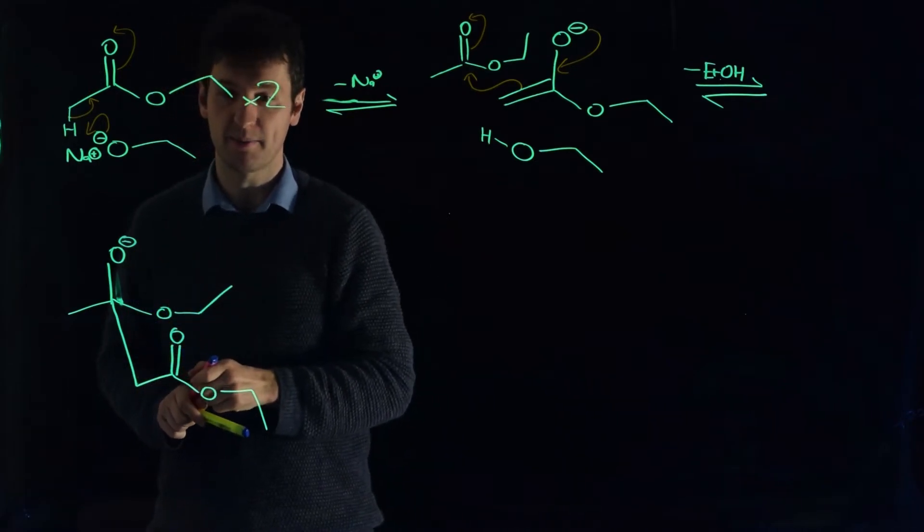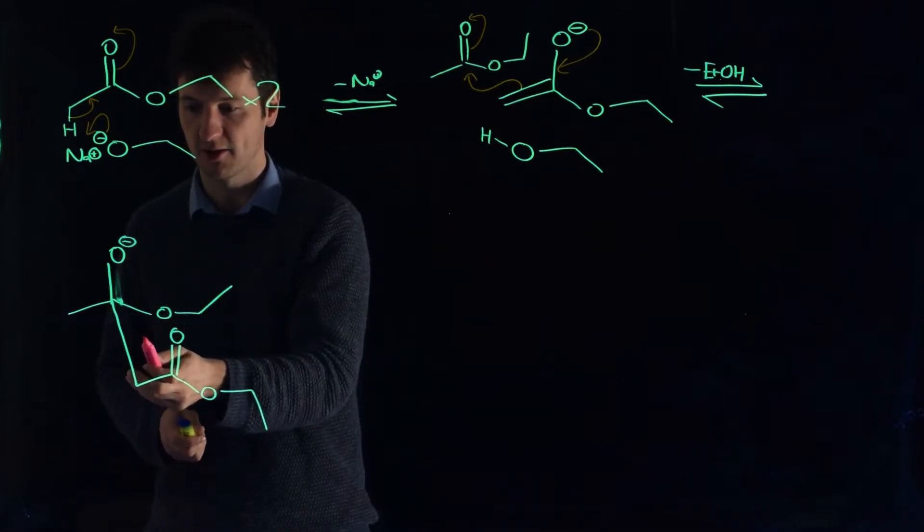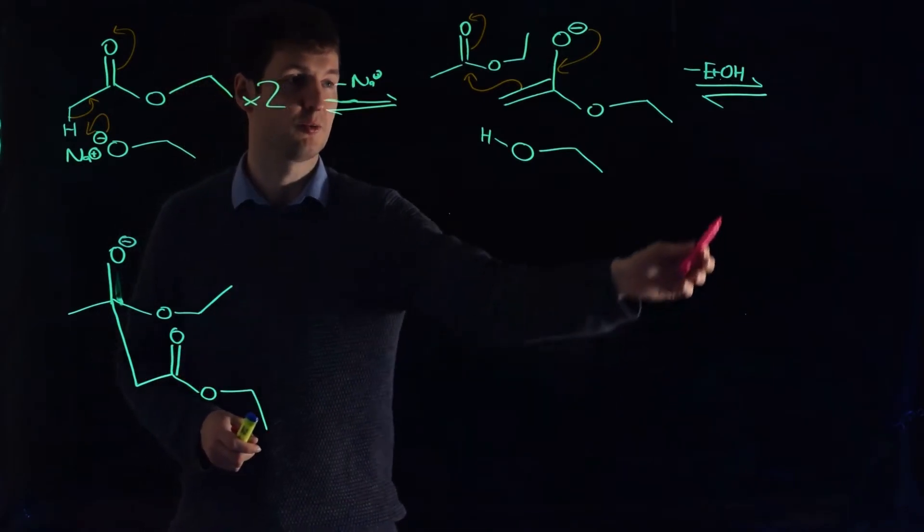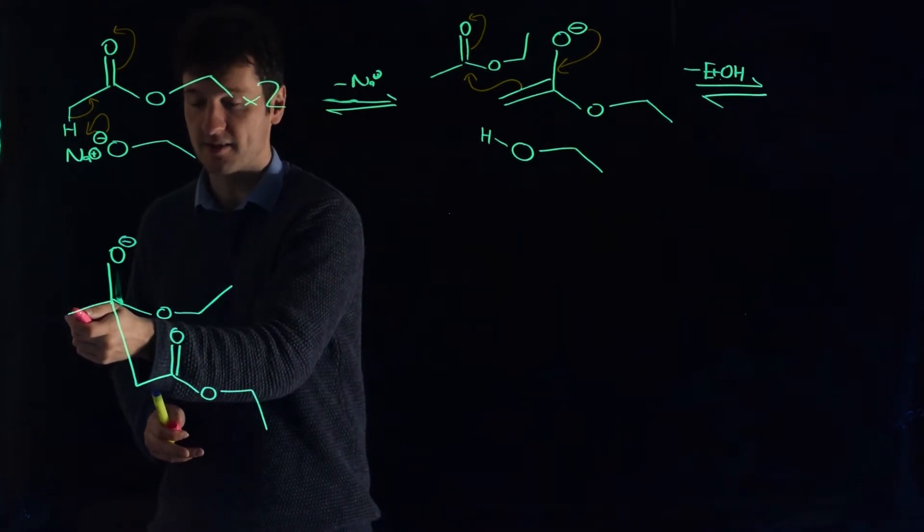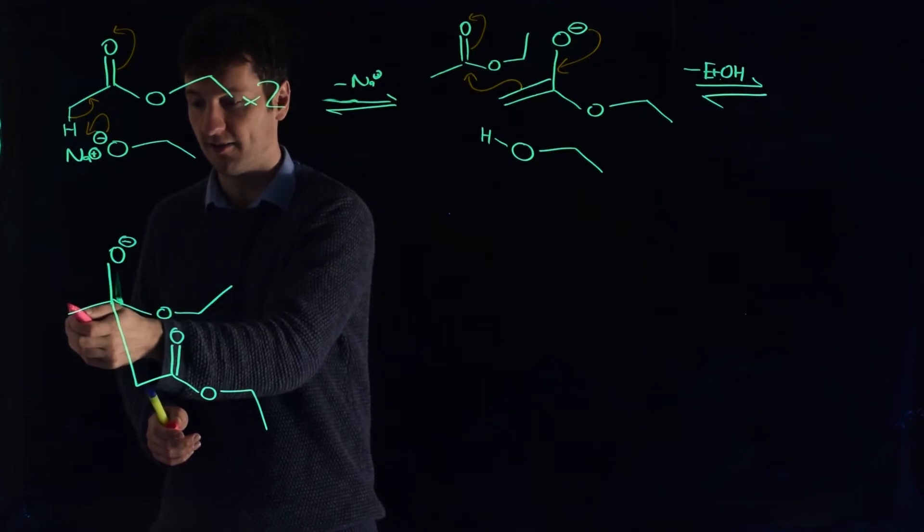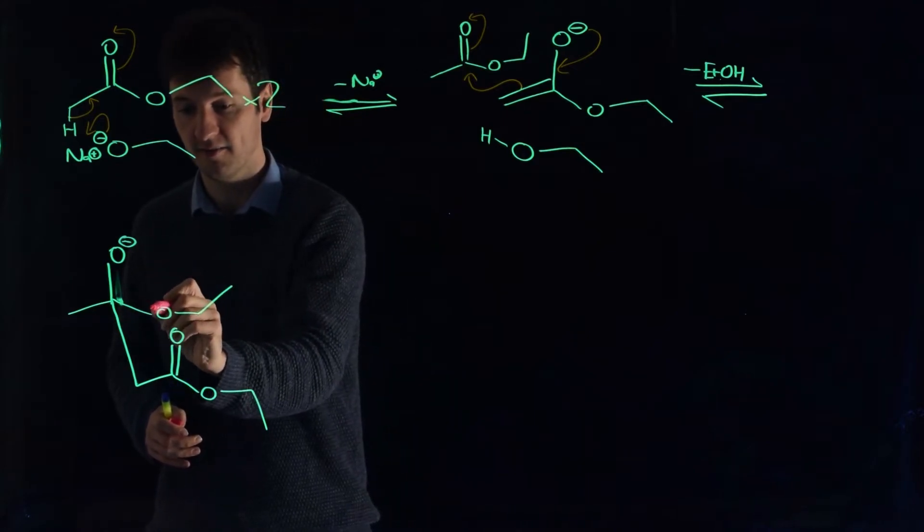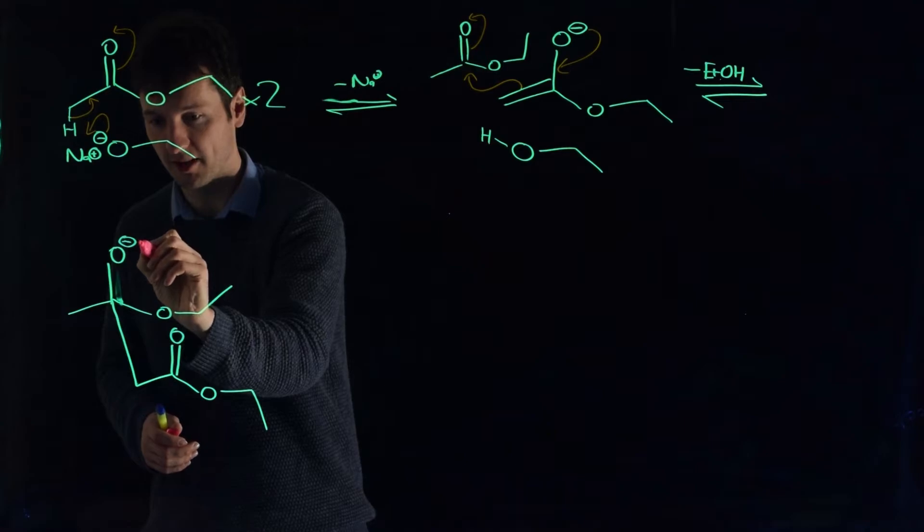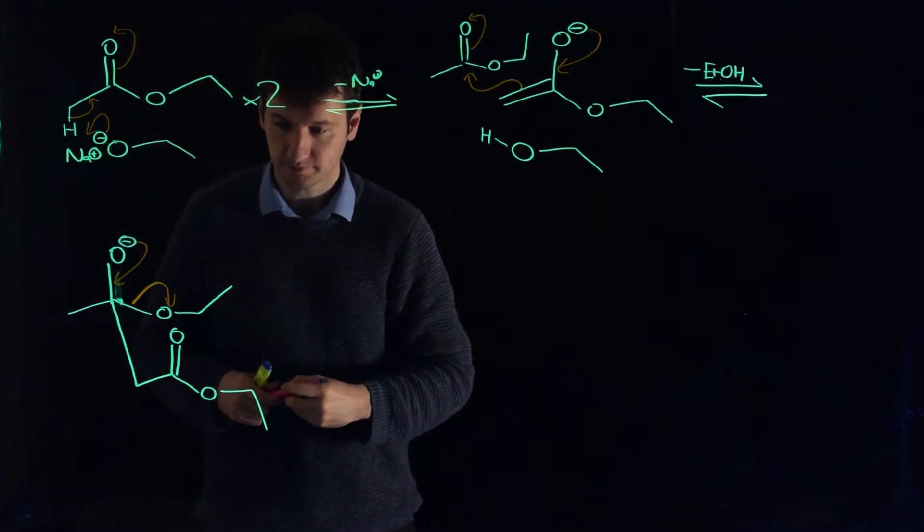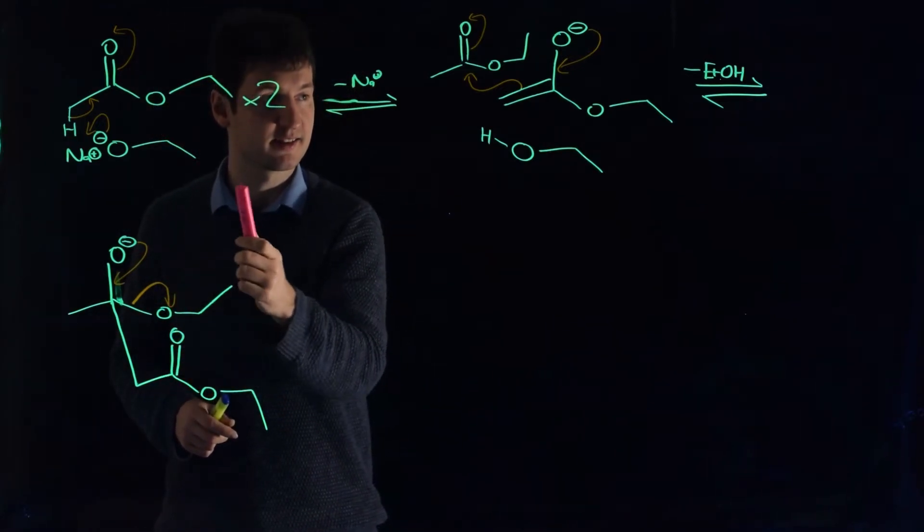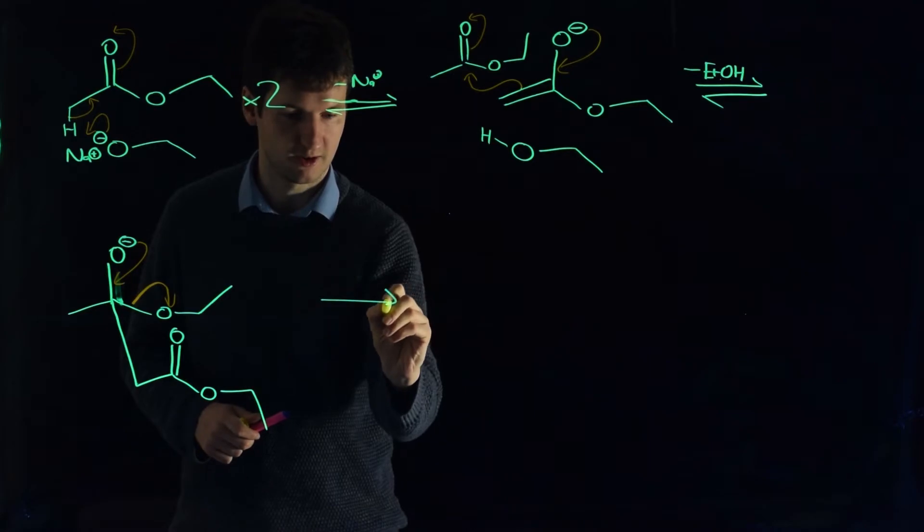So what's going to happen now? Our tetrahedral intermediate is going to collapse and kick out a leaving group if there's a leaving group available to kick out. Well, let's assess these three things to see if they'd be good leaving groups. If this leaves, then we're just going backwards, and that's a possibility, but it doesn't take us anywhere, so let's not pay any attention to it. Our carbon is never going to leave—you're not going to have a carbon with a negative charge leaving on it, especially when it would just be a methyl with a negative charge. That would be exceptionally unfavorable.